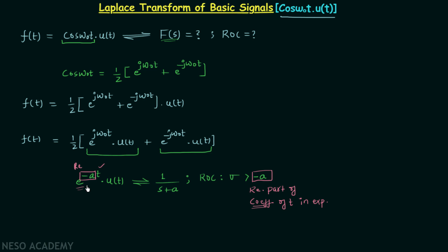We compare −a with σ, the real part of the variable s. The sign — either greater than or less than — depends on the signal. Since we have u(t), which is a right-sided signal, we choose the greater-than sign. So the ROC is: real part of s greater than −a. This is the shortcut method to calculate the region of convergence.